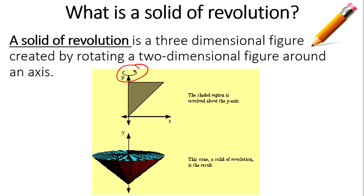So if we have a two-dimensional triangle and we rotate it around that y-axis, we get a cone with the vertex or apex of the cone on the bottom and the base at the top.